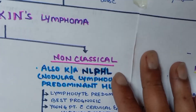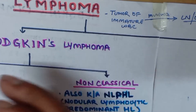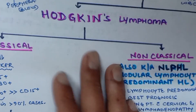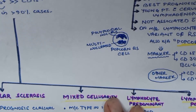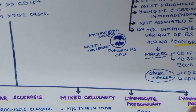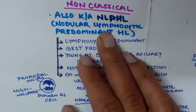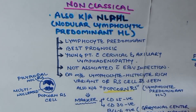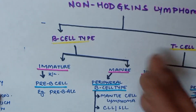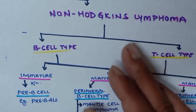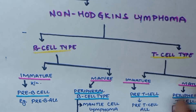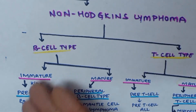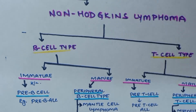In summary, lymphoma is classified into Hodgkin's and non-Hodgkin's lymphoma. Hodgkin's lymphoma has classical subtypes — nodular sclerosis, mixed cellularity, lymphocyte predominant, lymphocyte poor — and non-classical NLPHL. Non-Hodgkin's lymphoma is divided into B-cell type and T-cell type, each further divided into immature and mature forms with specific examples.